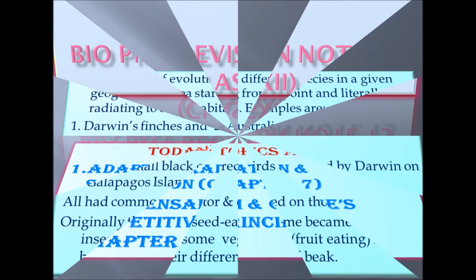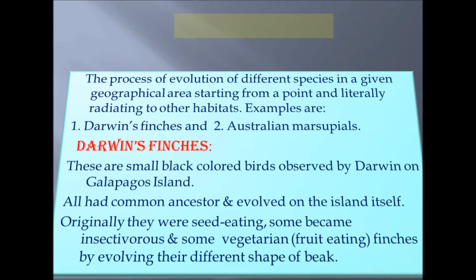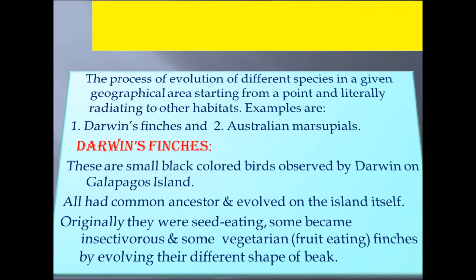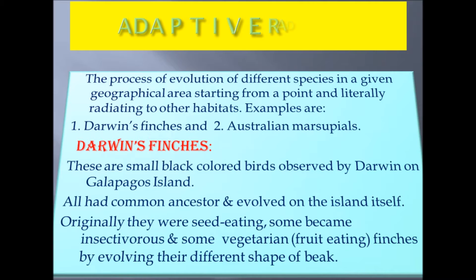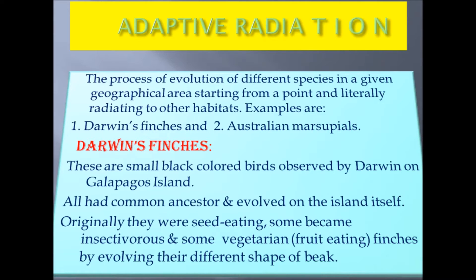First one is adaptive radiation. It is the process of evolution of different species in a given geographical area, starting from a point and literally radiating to other habitats. Examples of adaptive radiation are Darwin's finches and Australian marsupials.